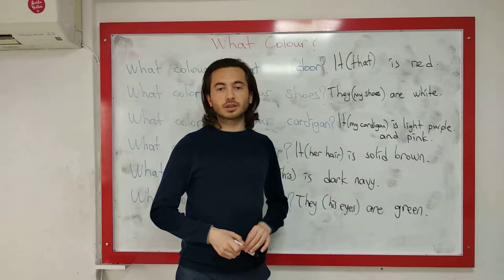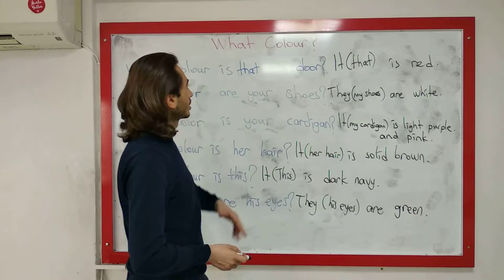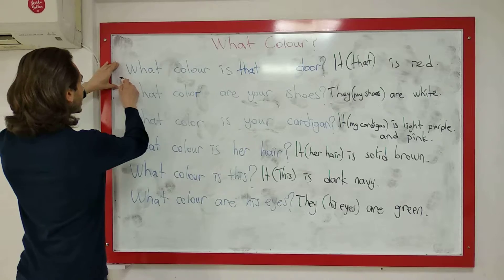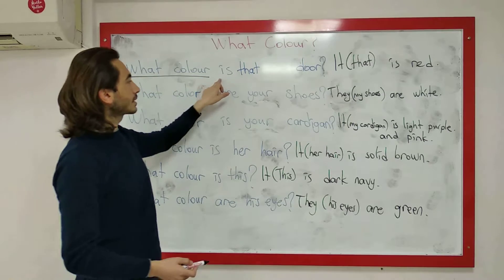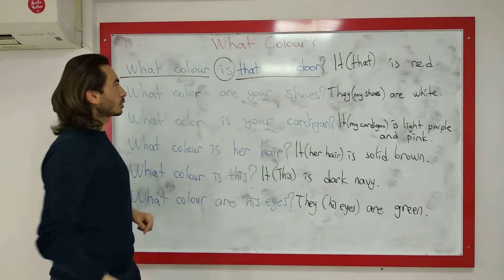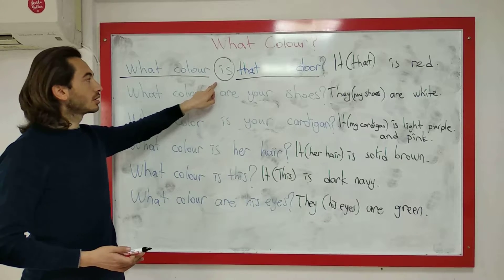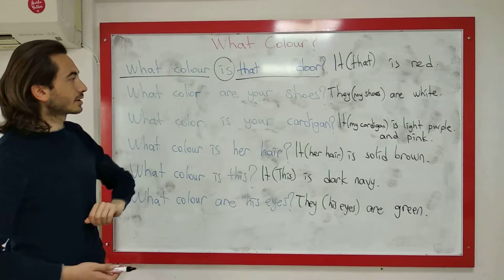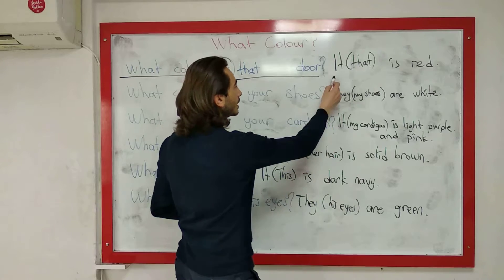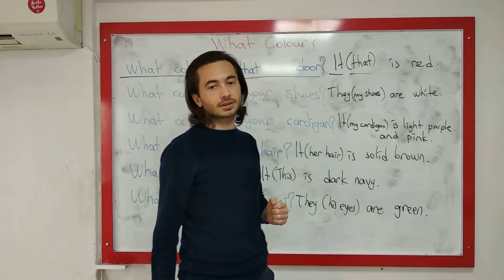Şimdi renkleri sormaya geldik. Renkleri sorarken 'what color' sorusunu kullanıyorum. What color — hangi renk veya ne renk demektir. Örnek: What color is that door? That door — şu kapı. Şu kapı tekil olduğu için burada 'is' kullandım. What color is that door? Şu kapı ne renk? Cevap verirken: It is red or that is red.